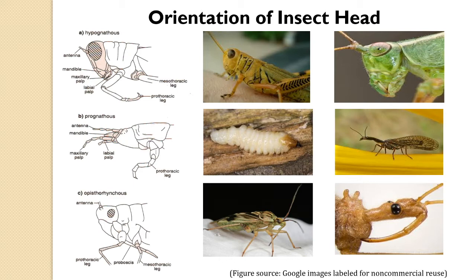The mouthparts of all insects enclose a cavity known as the pre-oral cavity, with the mouth at its inner end. The part of the pre-oral cavity that encloses the proximal part of the hypopharynx and the clypeus is known as the cibarium. Between the hypopharynx and the labium is a small cavity known as the salivarium, into which the salivary duct usually opens. This is the general pattern of head orientation — hypognathous, prognathous, and opisthognathous.